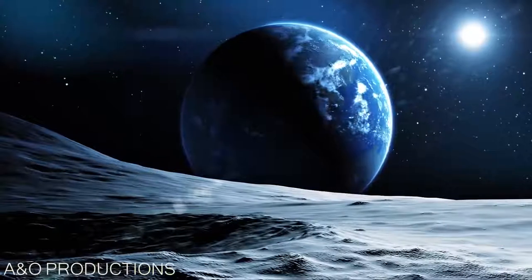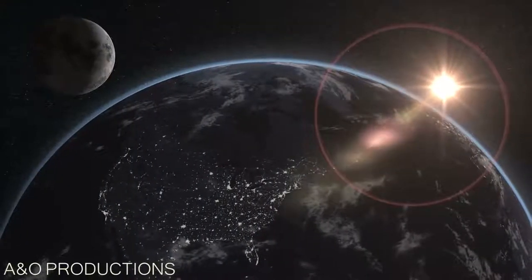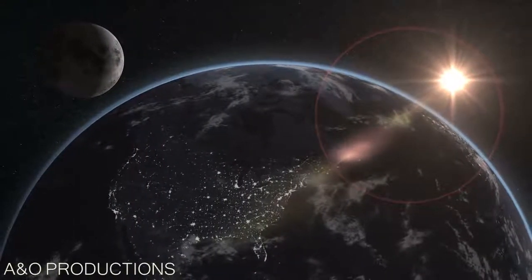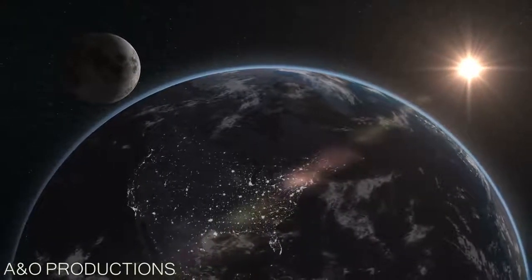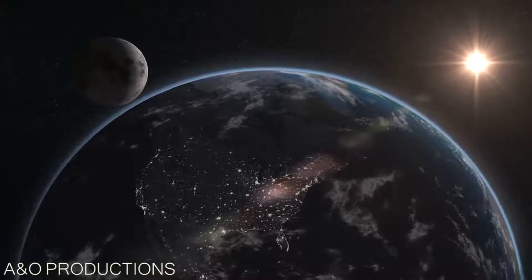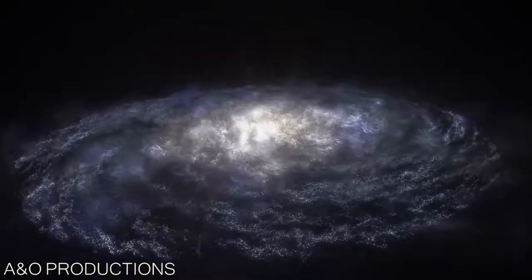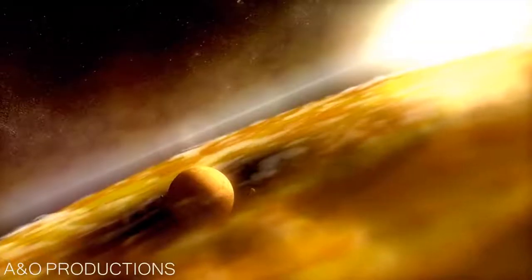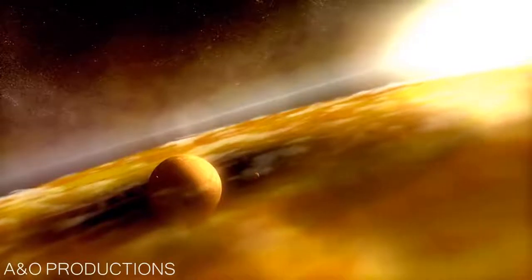Another major problem for evolutionists is that the Moon would have been extremely close to the Earth in the past. In fact, the Moon would have gotten so close that it would have hit the Earth in far less time than 4.5 billion years ago. Evolutionists claim that our solar system emerged from a cloud of swirling dust. Therefore, the composition of the various planets and their temperature should be similar to one another, but they are not.